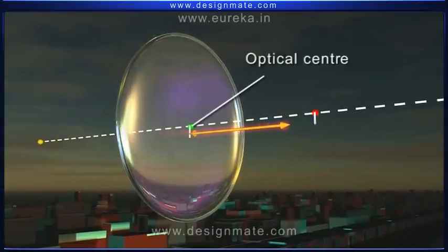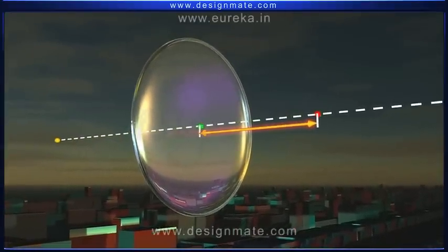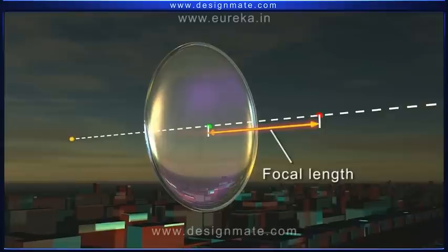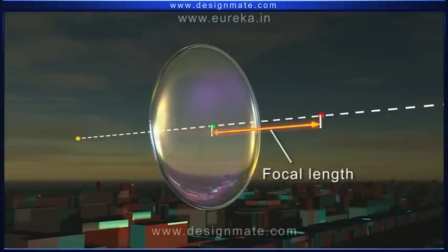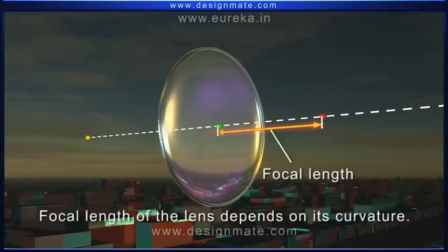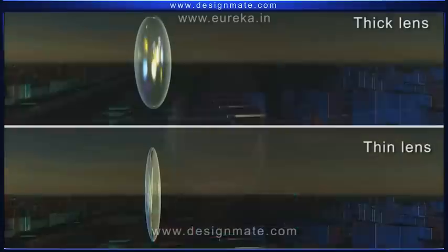The distance from the optical center of the lens to the focal point is called the focal length of the lens. The focal length of the lens depends on its curvature.